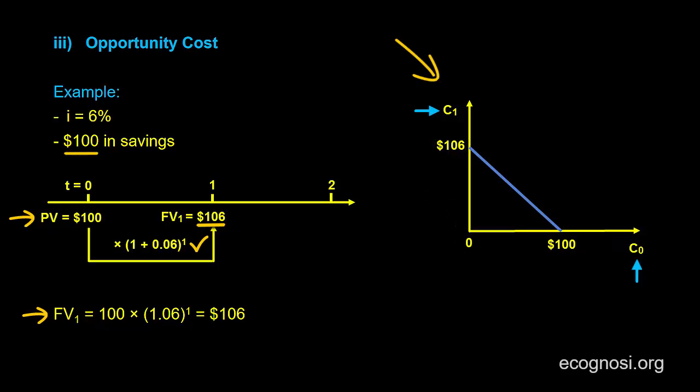So in other words, from these two scenarios I presented, we conclude that there's a trade-off involved. Any consumption today comes at the expense of reduced future consumption and vice versa. And if you're at all familiar with economics, you would already know that the word trade-off goes hand in hand with the term opportunity cost. And that's why in this case, we would interpret our interest rate as the opportunity cost.